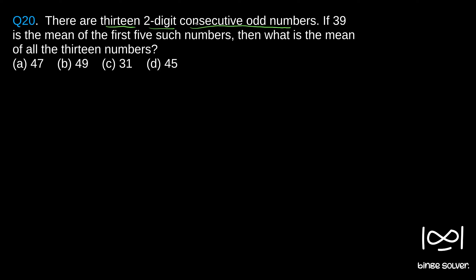In such questions, whether the numbers are consecutive or following some pattern, it is always good to construct the numbers like this. We will first assume the middle number as x. Since these are consecutive odd numbers, if the middle number is x, the next odd number will be x plus 2.